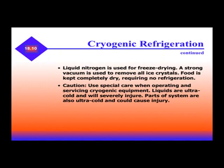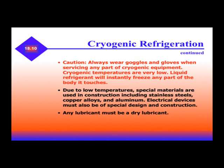A strong vacuum is used to remove all ice crystals in freeze drying, and food is kept completely dry, requiring no refrigeration. When using cryogenic equipment, be careful — you need to use special care when operating and servicing. Liquids are ultra-cold and will severely injure you, and parts of the system are also ultra-cold and could cause injury. Always wear goggles and gloves when servicing any part of cryogenic equipment. Liquid refrigerant will instantly freeze any part of the body it touches. Due to low temperatures, special materials are used in construction, including stainless steel, copper alloys, and aluminum. Electrical devices must be of special design to handle the cold temperatures, and any lubricant used must be a dry lubricant.